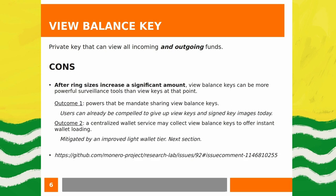The con of the view balance key: once ring sizes increase significantly — assuming the Seraphis upgrade goes through — you could argue that a view balance key becomes a more powerful surveillance tool than a view key that can only see incoming funds. Once large ring sizes exist, making strong guesses about a user's outgoing funds becomes more difficult, meaning at that point the view balance key is worse than a plain view key from a privacy perspective.